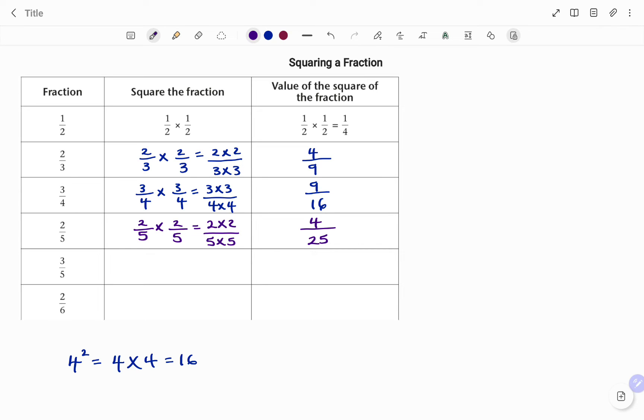For the next one, we have 3 over 5 times 3 over 5, that's to square 3 over 5. For our numerator, that's 3 times 3, and our denominator, 5 times 5. 3 times 3 is 9, and 5 times 5 is 25.